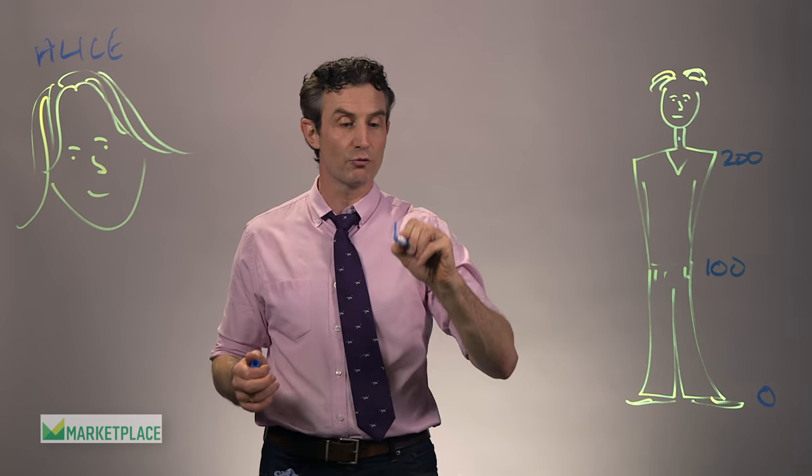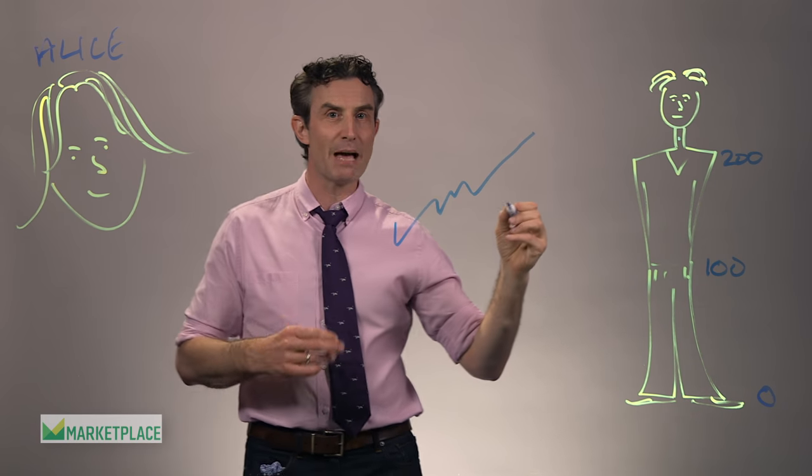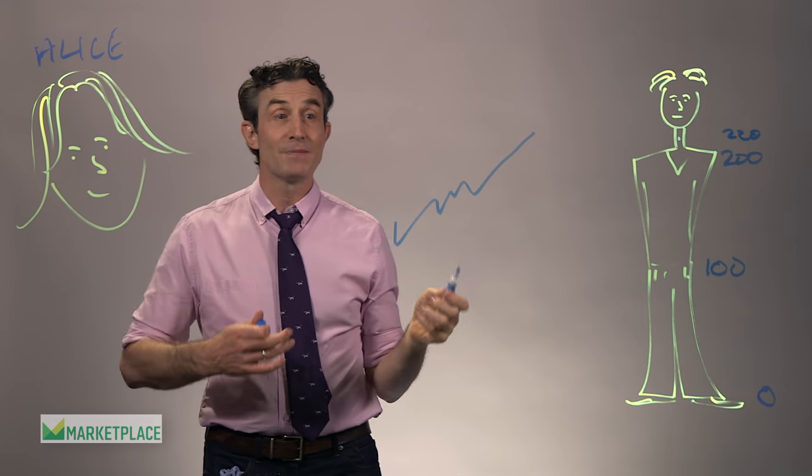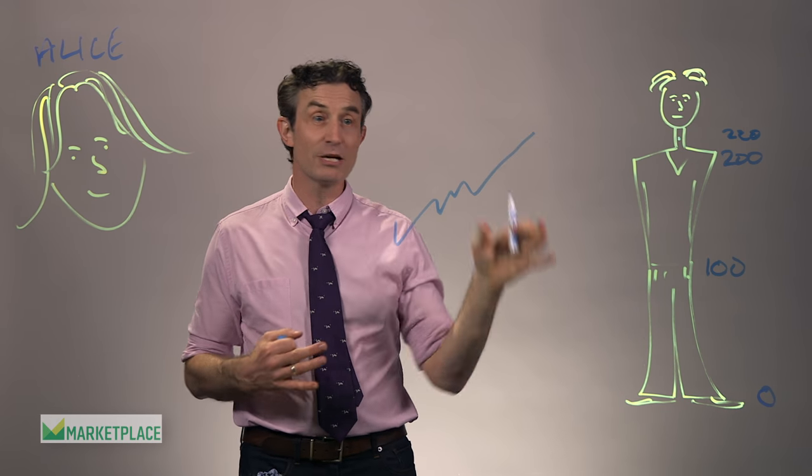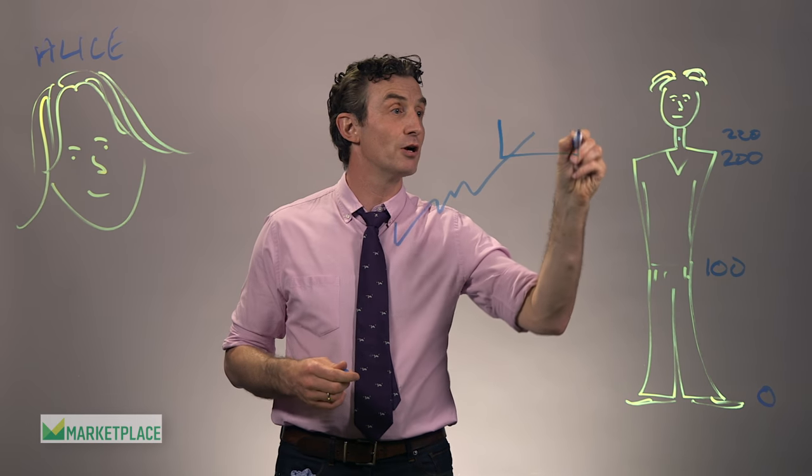Now, recently, this stock has gone on a run and it's been zipping up the market. And it's right about Adam's Apple level there, about two hundred and twenty dollars. Now, at this point, Alice wants to protect herself from losing all of these gains. So she decides to play doctor and slap a collar on the stock.